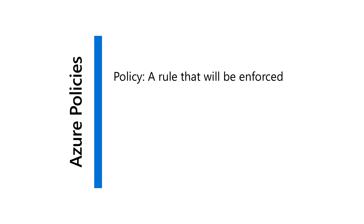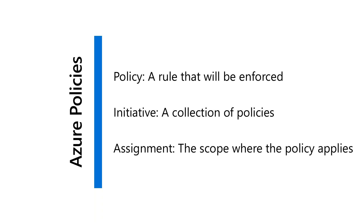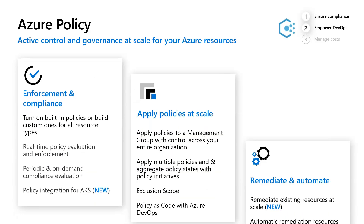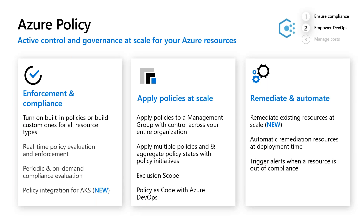Azure Policy basically is a rule that will be enforced. An initiative is a collection of different policies, and then you do an assignment for where those policies should apply. My recommendation when starting with Azure Policy is to first start by auditing — see everything that's not compliant. At a later stage, you can say you don't want to allow deployments of anything non-compliant — the deployment will actually fail if they try. Azure Policy integrates into VMs using Azure Guest Configuration Policy and also into Azure Kubernetes Service with a preview for AKS. There's also a GitHub repository with policies from others, and it integrates into Azure DevOps so you can validate policies before actual deployment happens.